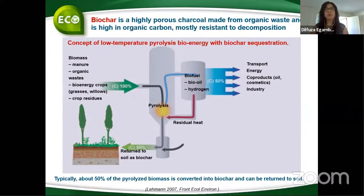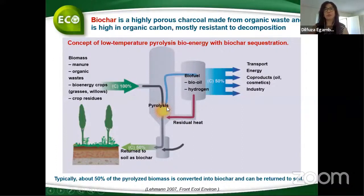Biochar can be processed at low or high temperature through pyrolysis. When using biomass — organic waste with 100 units of carbon — after pyrolysis about 50 percent of carbon goes as energy to industry and about 50 percent is returned back to soil as biochar. This input of carbon helps maintain soil fertility.